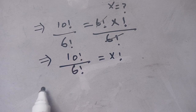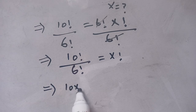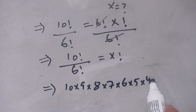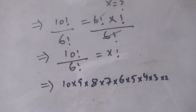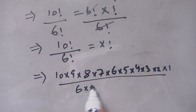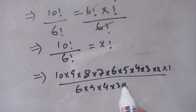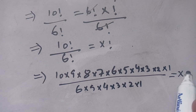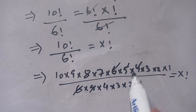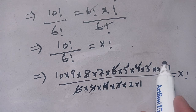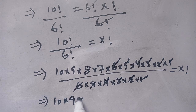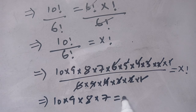In the next step, we open 10! and 6!. We write 10! as 10×9×8×7×6×5×4×3×2×1, divided by 6! written as 6×5×4×3×2×1, equal to x!. We cancel 6 with 6, 5 with 5, 4 with 4, 3 with 3, 2 with 2, and 1 with 1. Our remaining terms are 10×9×8×7 = x!.